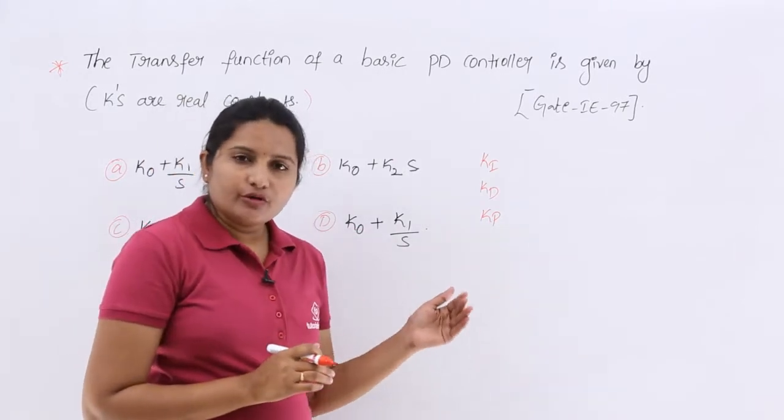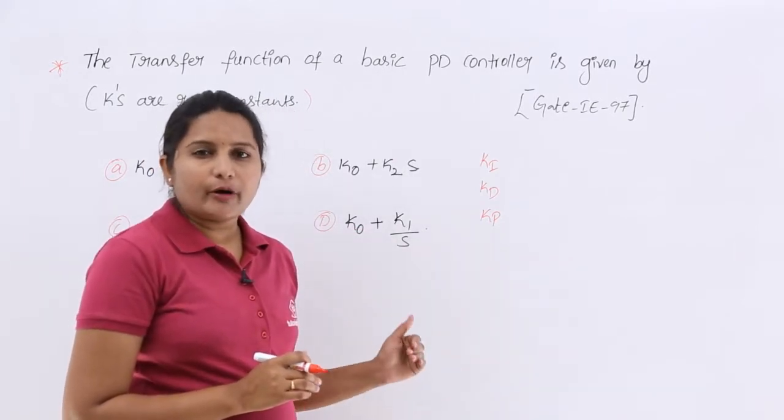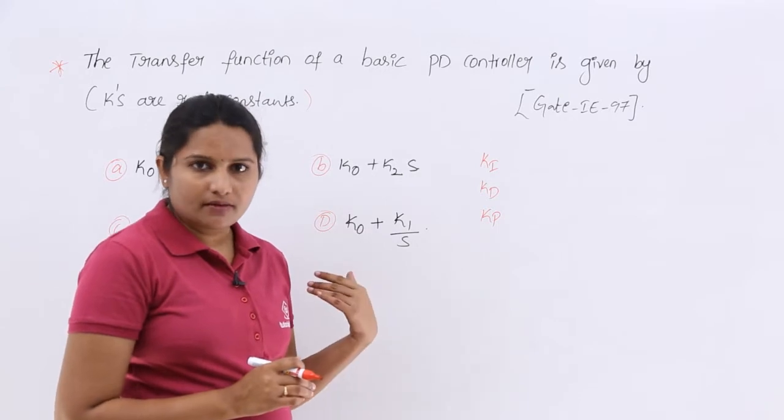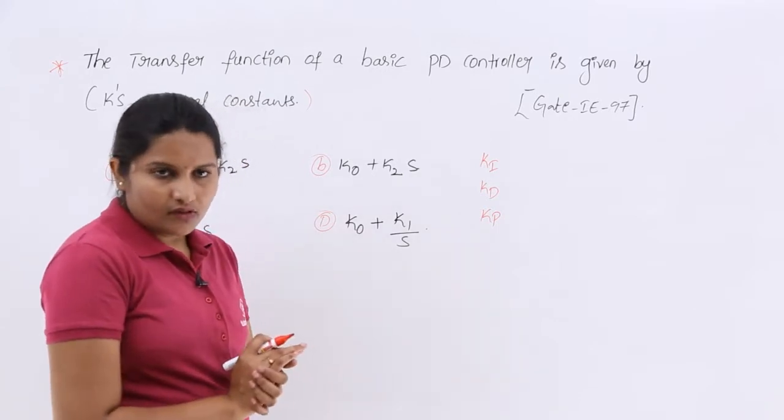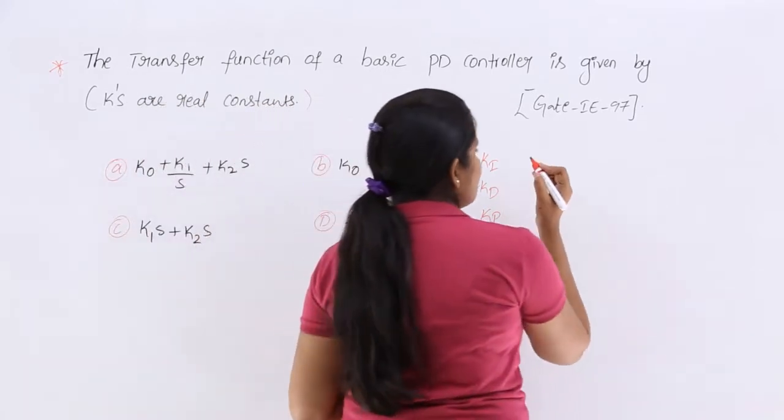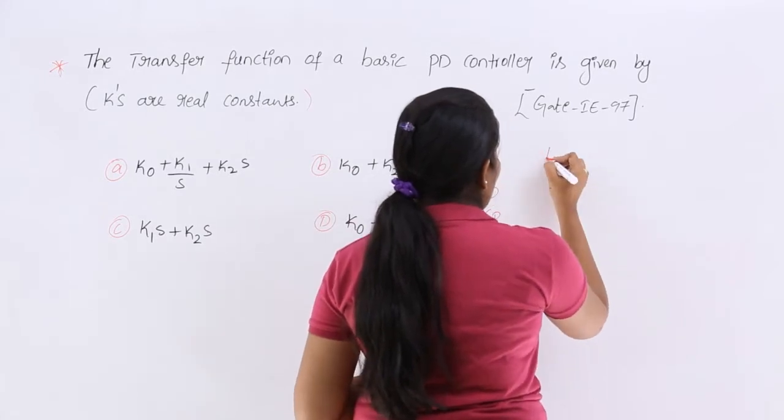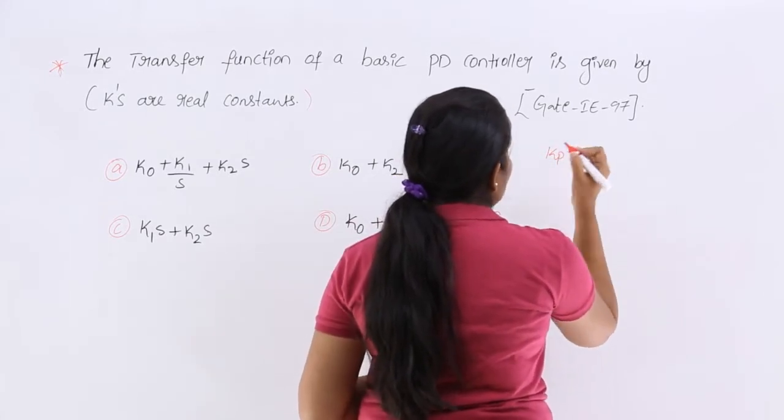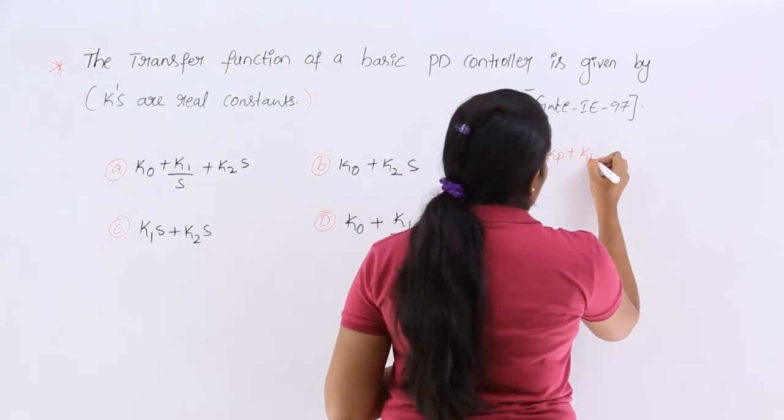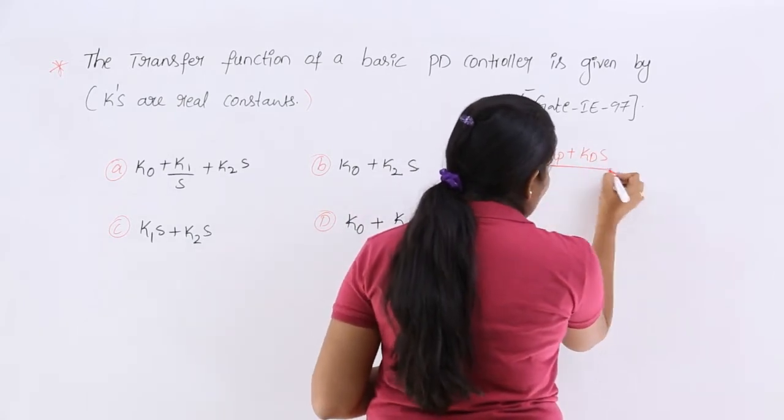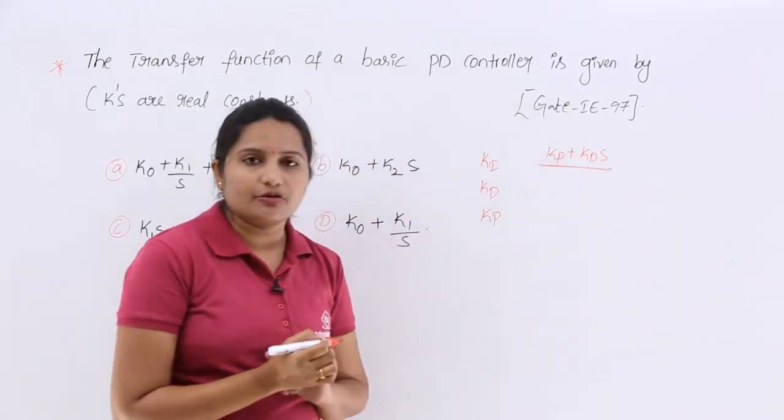Generally, if you observe that video of proportional differential controller, PD controller, the transfer function will be like this. That is the combination of proportional and derivative. That means Kp plus Kd into S. This will be your transfer function of PD controller.